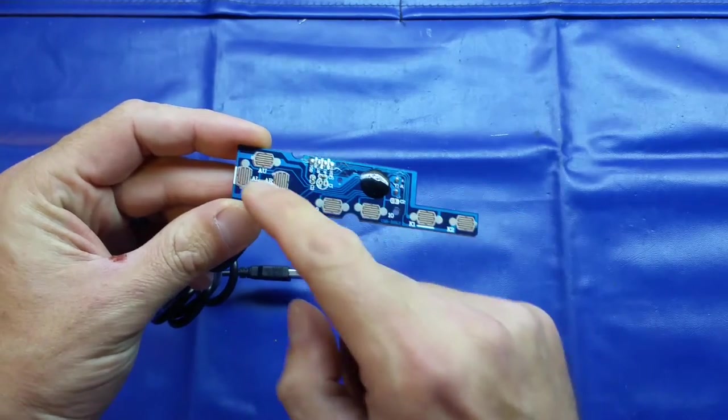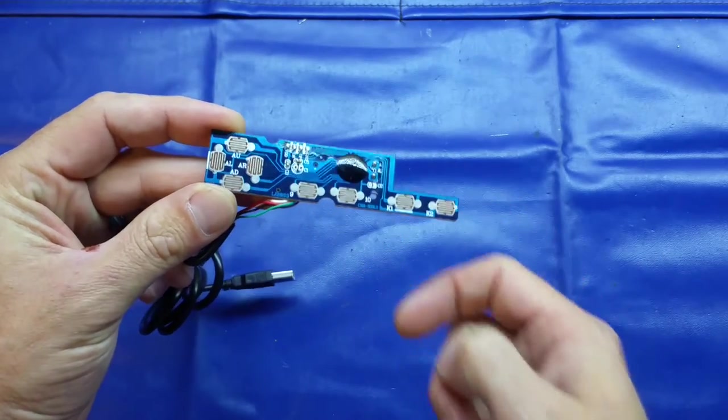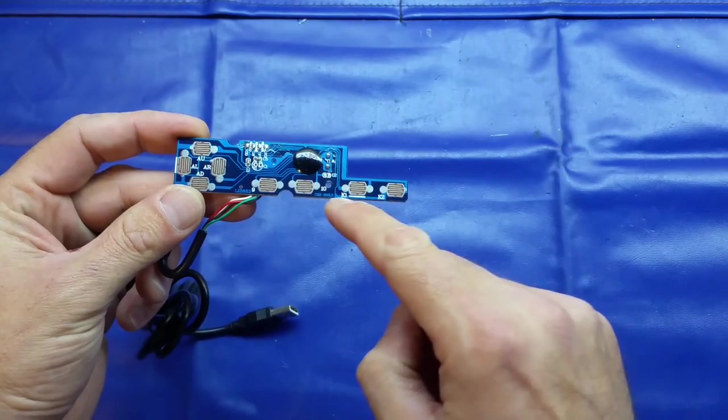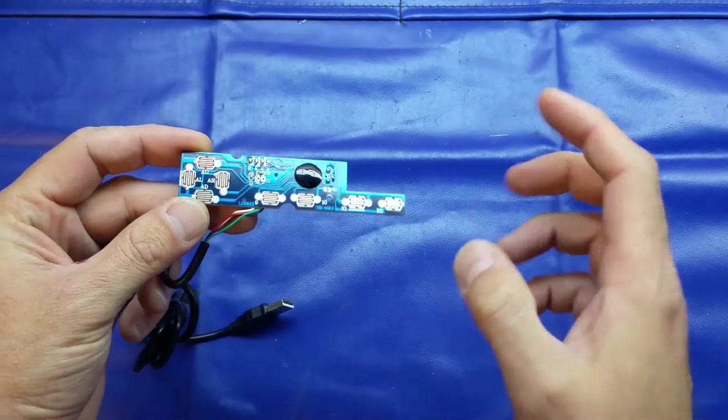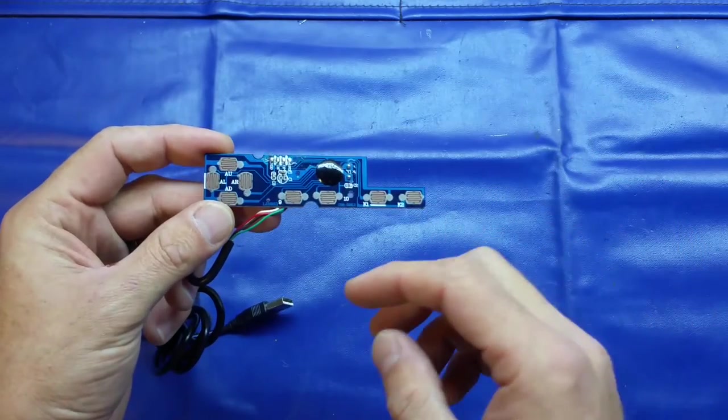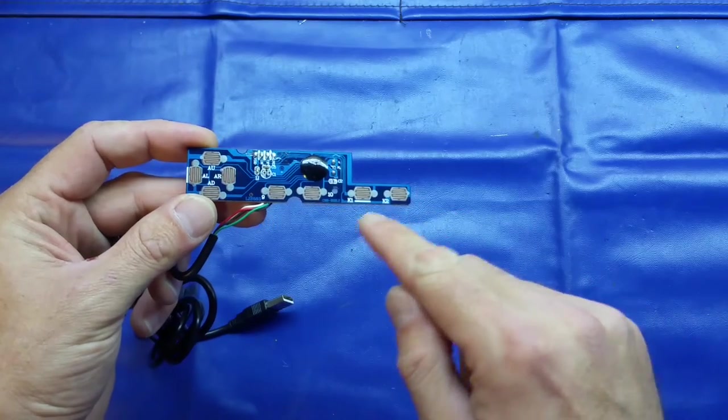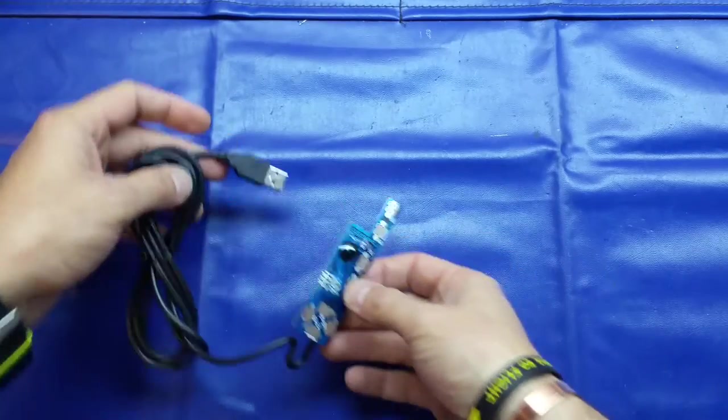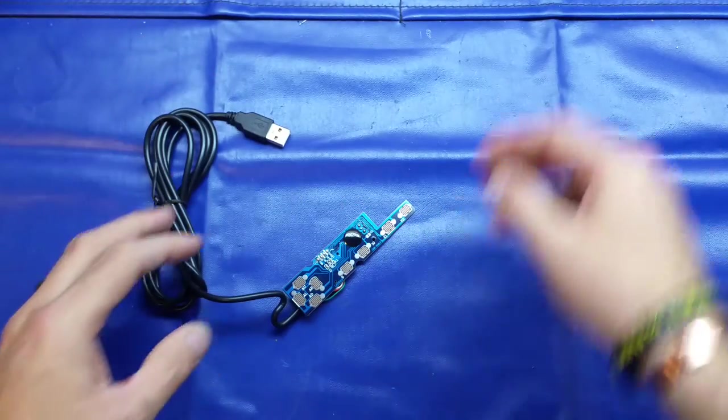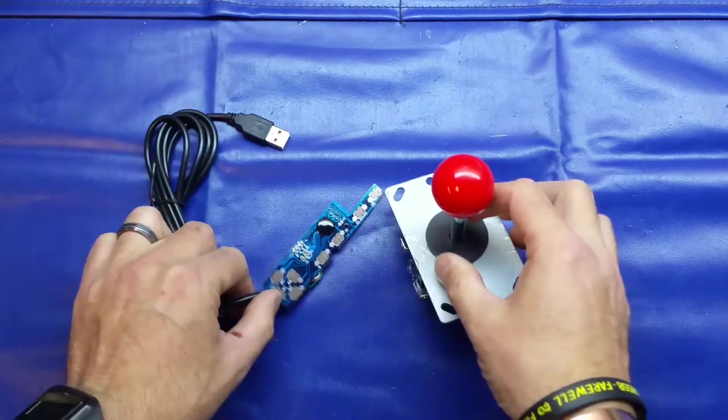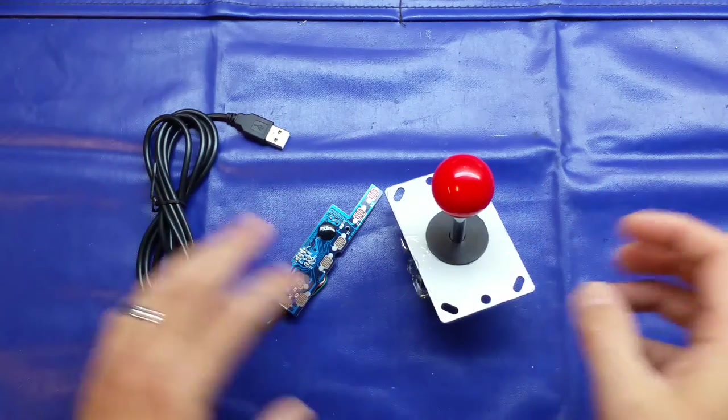All we're going to have to do is tack wires onto these buttons from our replacement joystick and the buttons itself, and then it'll basically be a USB joystick. Obviously it's not going to be very tidy, so we're going to have to put it in an enclosure as well.